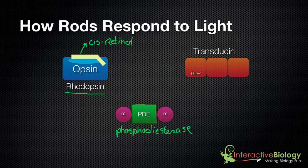To keep the bigger picture in mind, the phosphodiesterase is the one that really does the work. However, it cannot do what it needs to do because it has two inactivating alpha subunits attached. In order for phosphodiesterase to do its job, these alpha subunits need to be removed. Keep that in mind as we go through this process.